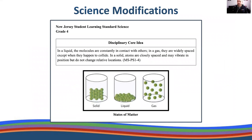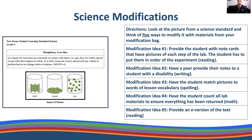Here is an example of a science modification for a learning standard for grade four. The disciplinary core idea is about solid, liquid, and gas: in a liquid, molecules are constantly in contact with others; in a gas, they are widely spaced except when they happen to collide; and in a solid, atoms are closely spaced and may vibrate in position but do not change relative locations. The image shown is a cylinder depicting various states of matter — something you could be working on in your science class.